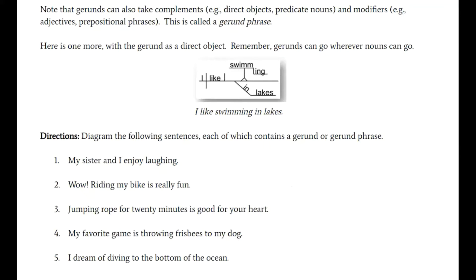One tip for diagramming and recognizing gerunds is to simply look for -ing words and then decide whether or not that word functions as a noun. Let's look at number one: 'My sister and I enjoy laughing.' My sister and I enjoy what? Laughing is the direct object here, and direct objects are nouns, so here we have a gerund. Good luck — try to do all five.